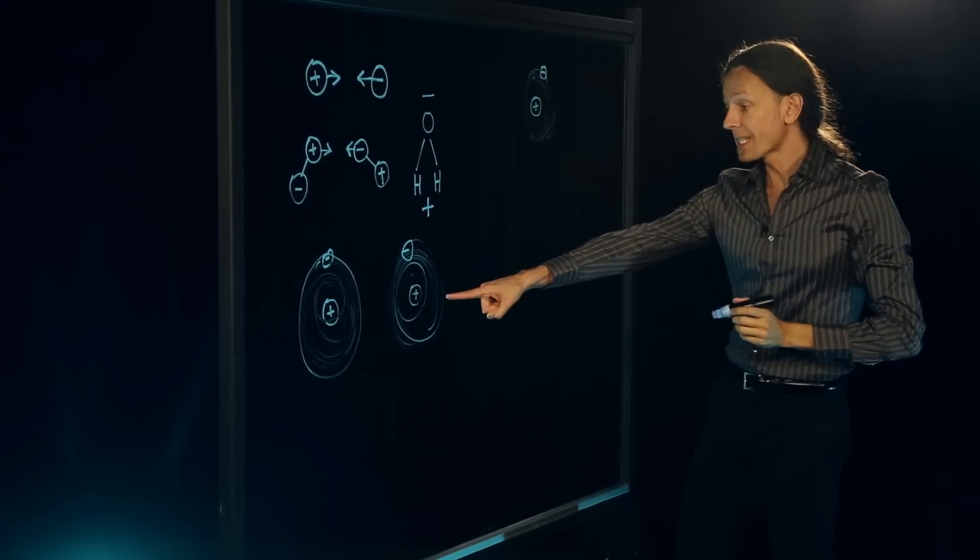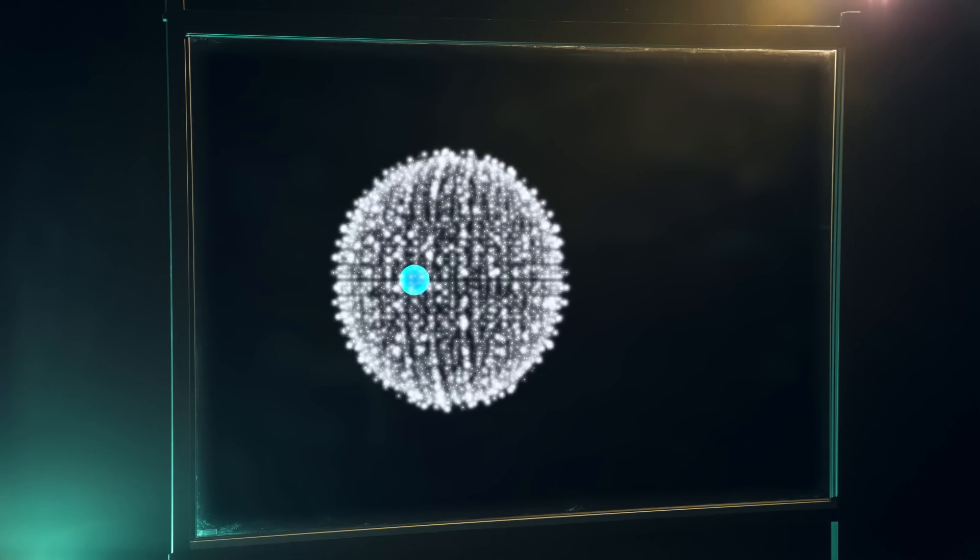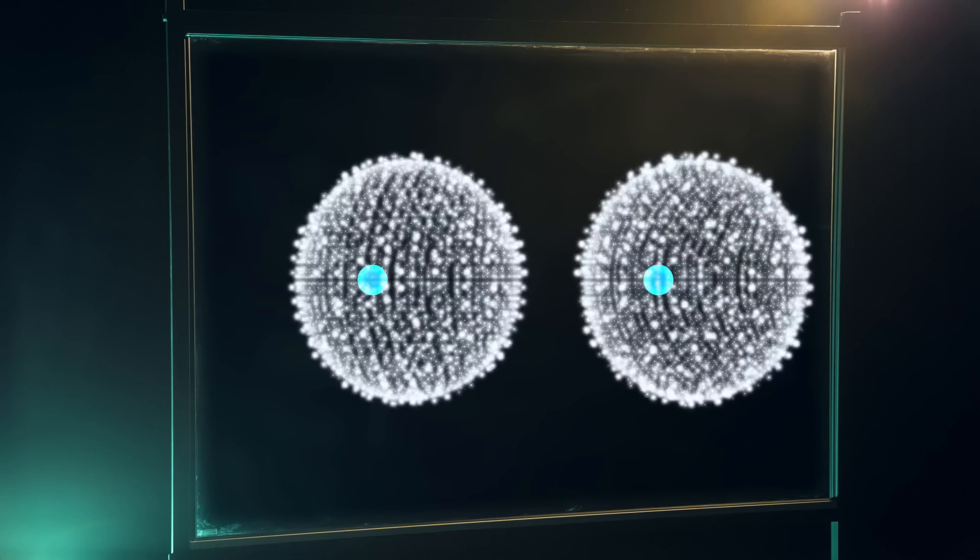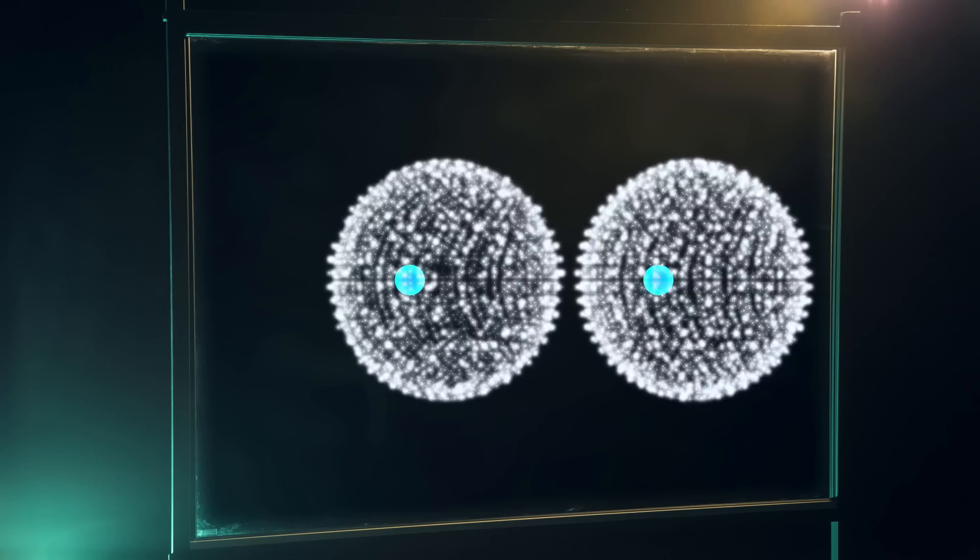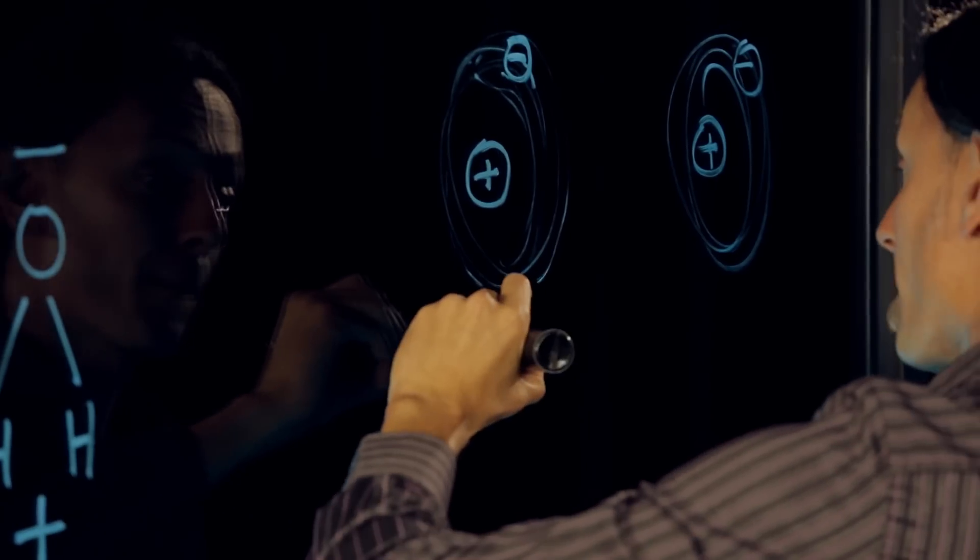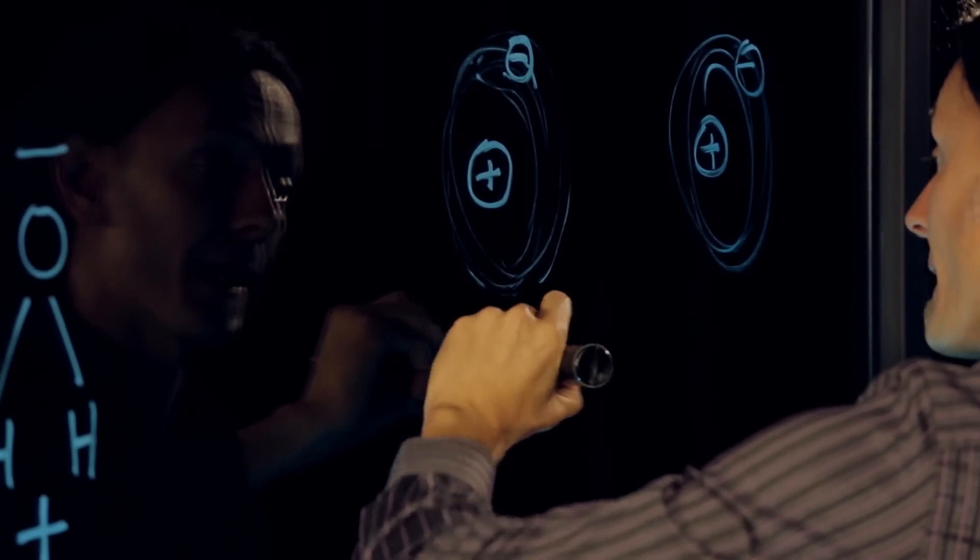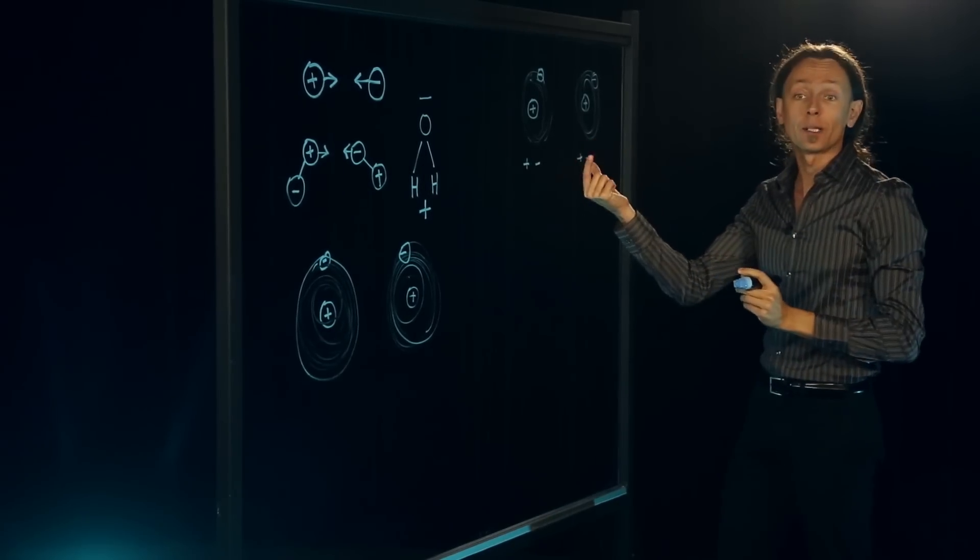And if the same happens at the same time with the hydrogen on the right-hand side, then what you have is two dipoles, right? Because this is essentially like a dipole that is positive on the left and negative on the right, and the same on this one. So these two dipoles now attract each other.